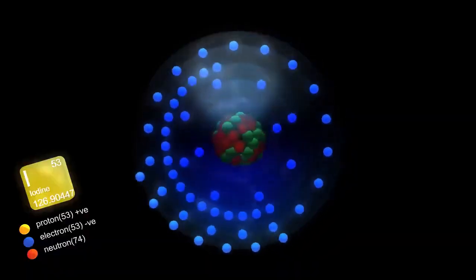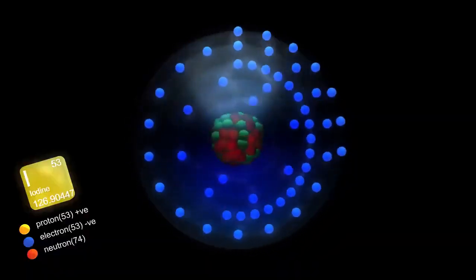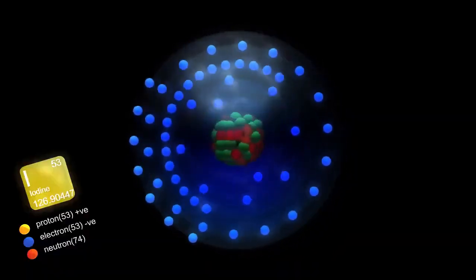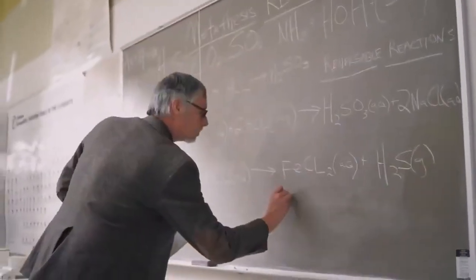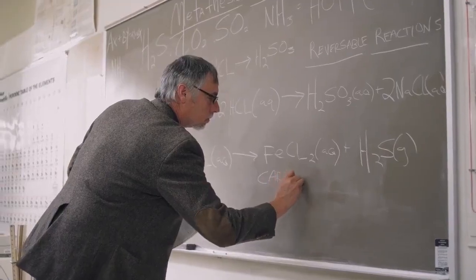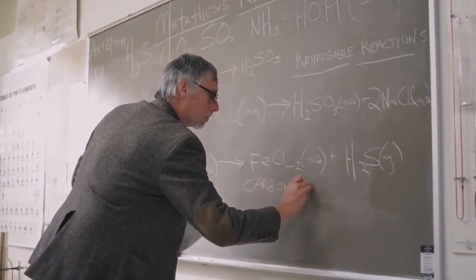These fermions interact through three types of fields: electromagnetism involving photons, the strong nuclear force involving gluons, and the weak nuclear force involving W and Z bosons. According to Cambridge theoretical physicist David Tong, without these force fields, matter particles would drift aimlessly in the universe without interactions or interesting behaviors.